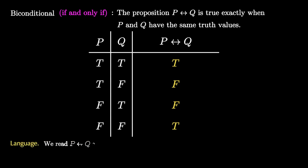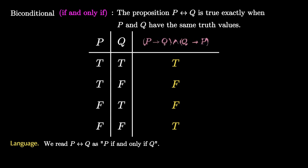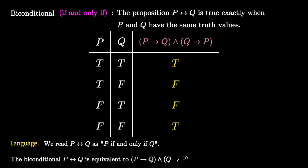We read the biconditional by saying 'p if and only if q,' meaning we have both 'if p then q' and 'if q then p.' So p implies q and q implies p together are equivalent to the biconditional. This is known as the biconditional law.